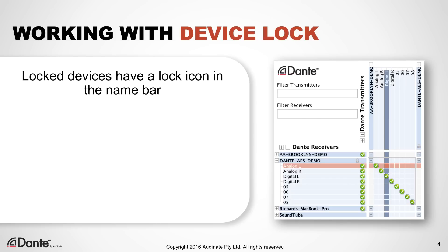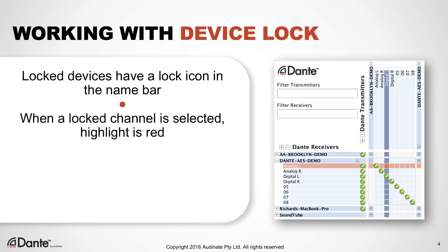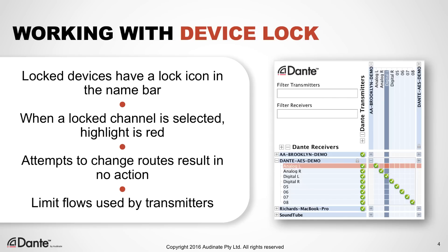In Dante controller, a Lock icon appears on the name bar of each locked device in the routing view. When channels of locked devices are selected or moused over, they are highlighted in red. Attempts to change routes on locked receivers will result in no action. Locked transmitters prevent unwanted additional flows from being created.